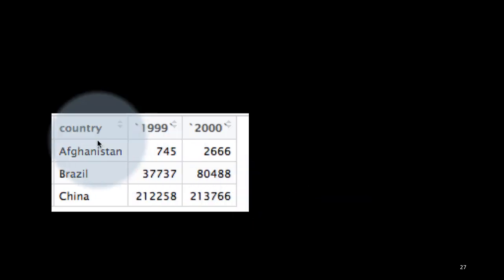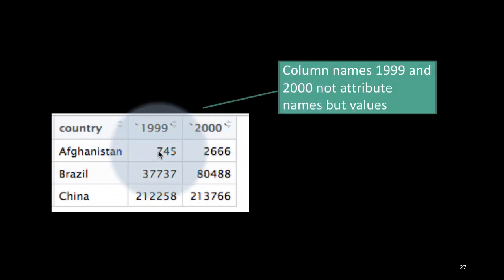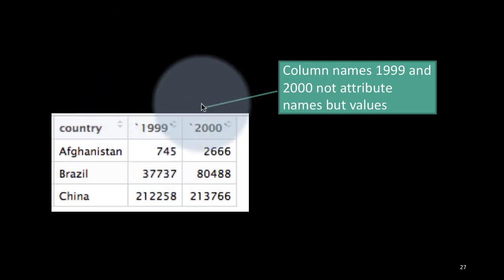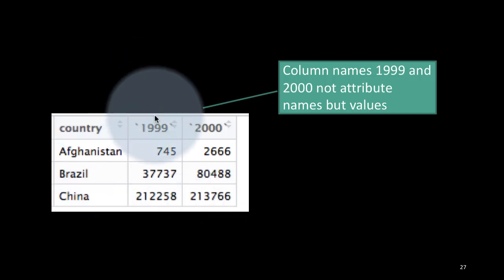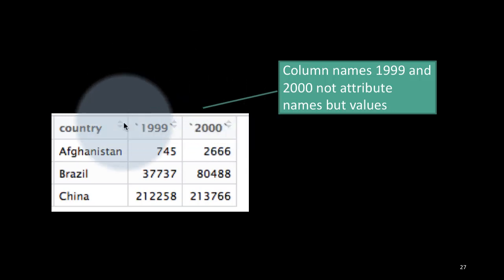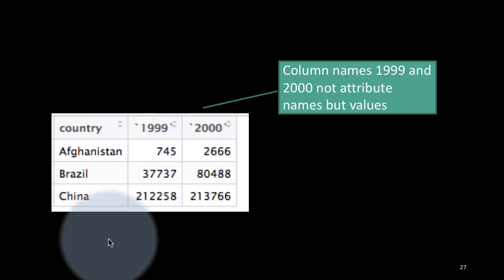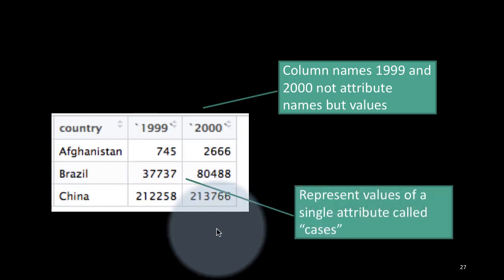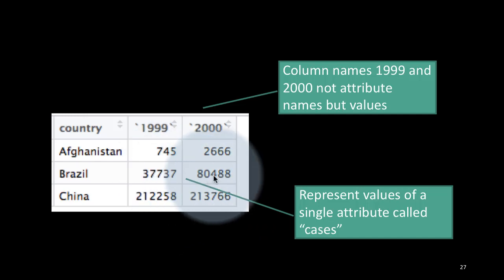Take this example. We have the same data — the fourth representation — where the number of cases in 1999 is in one column and the number of cases in 2000 is in a different column. Suppose we want the cases to be in one single column. Both of these columns represent the same kind of data — the number of cases of the particular disease occurring. So if we want them all in one column, the single attribute called cases is currently distributed across two columns, which can pose a problem.